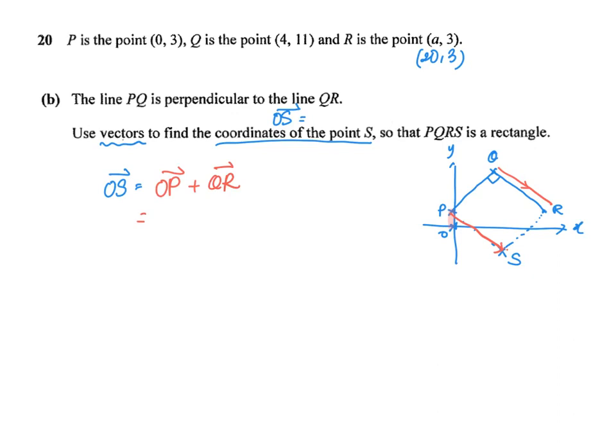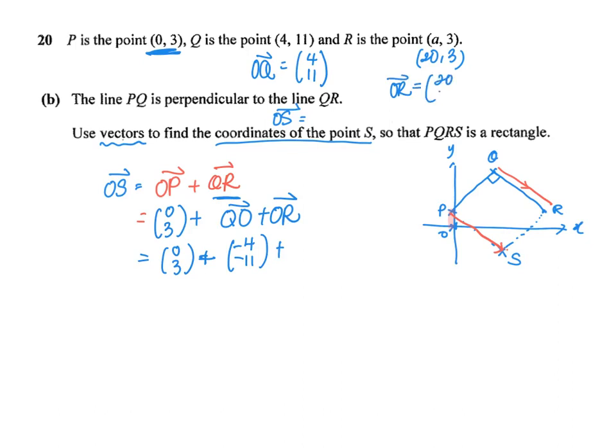Let us take a look. OP is the point, P is the point (0,3), so OP will be the vector (0,3). Q to R will be Q to O plus O to R. Now Q to O is negative, opposite direction of OQ. So OQ is (4,11), if it's the opposite direction, I'll have minus 4, minus 11. And finally, OR is the vector (20,3), so plus another (20,3). Simplifying everything, let us see what we'll get. We'll get the vector (16,-5).